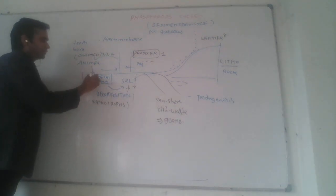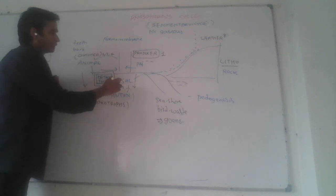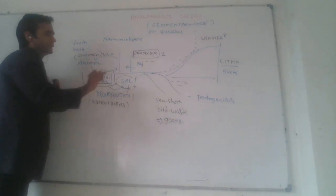At last, the dead bodies of plants and animals are converted into detritus. After decomposition, phosphorus is again replenished in the soil. This cycle continues again and again.